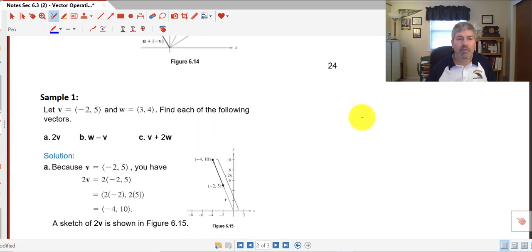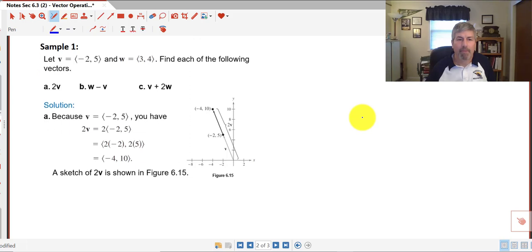So let's take a look at some samples. We've got a couple of vectors here in our component form. v is negative 2, 5, and w is 3, 4. Find each of the following vectors. 2v means essentially we're going to take v and double it. We're going to make it twice as long or twice the magnitude. So all we have to do is essentially scale each of those. So we're multiplying each of those by 2, and our new vector becomes negative 4, 10.